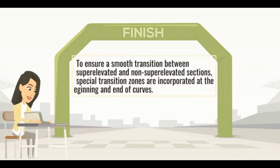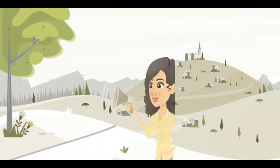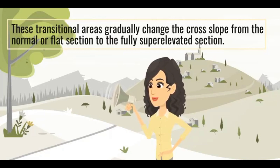To ensure a smooth transition between super elevated and non-super elevated sections, special transition zones are incorporated at the beginning and end of curves. These transitional areas gradually change the cross slope from the normal or flat section to the fully super elevated section.